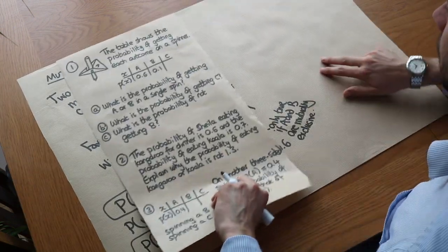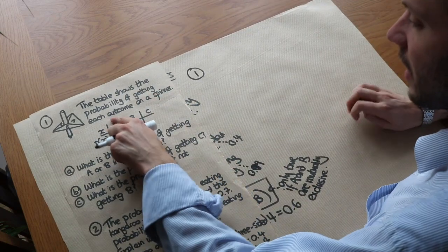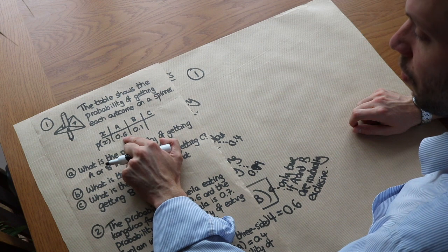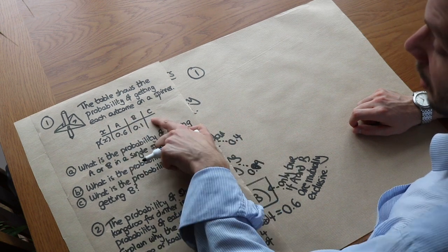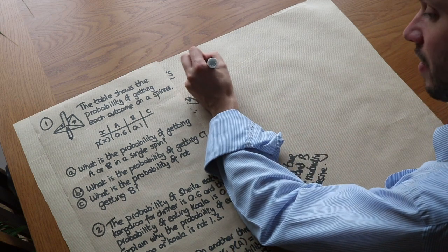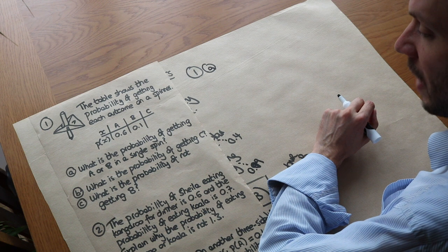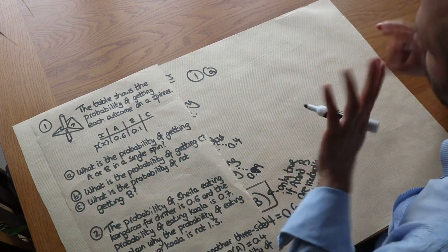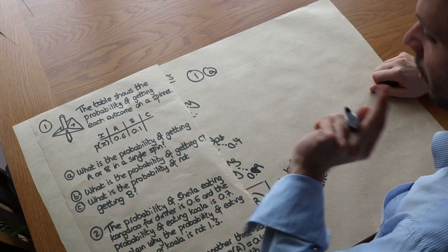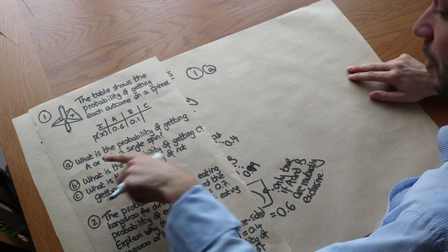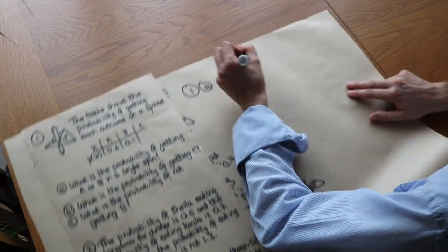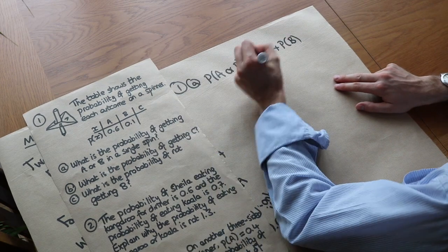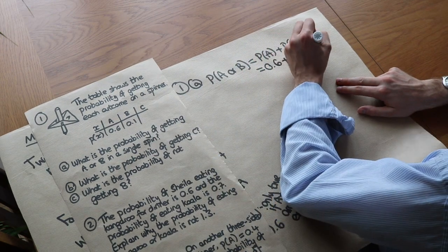Let's dive into question one. A table shows the probability of getting each outcome on a spinner with outcomes A, B, and C. The probability of A is 0.6, B is 0.1, and C is unknown. Part A: what is the probability of getting A or B in a single spin? These outcomes are all mutually exclusive — you can't get A and B at the same time. So we use the formula: probability of A plus probability of B, which is 0.6 plus 0.1, equal to 0.7.